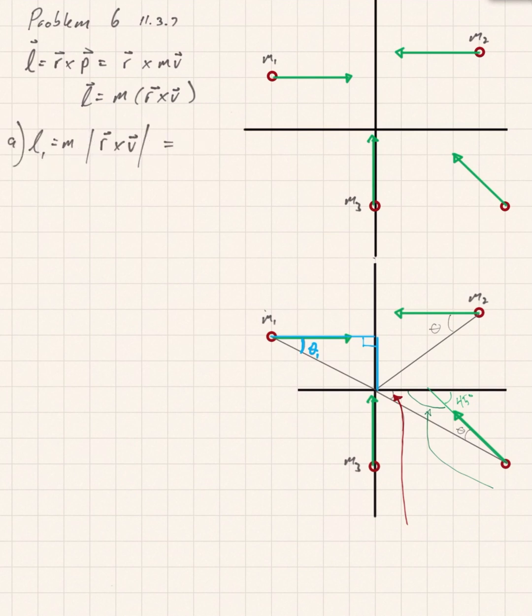For part A, we're going to look at the angular momentum of particle one which has mass m1. In general, the angular momentum is r cross p, which is equal to r cross mv. The mass is not changing, so we can simplify that to angular momentum being equal to m times r cross v. m here is just a constant, not a vector, that's why we could bring it out to the left.